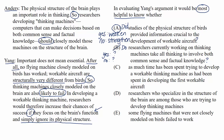C: as much time has been spent trying to develop a workable thinking machine as had been spent in developing the first workable aircraft. As a question: has as much time been spent trying to develop a workable thinking machine as developing the first workable aircraft? Time doesn't matter here. We care about what each kind of design — the aircraft design and the thinking machine design — was based on, not how long it took to make them.